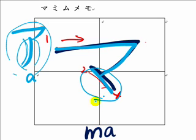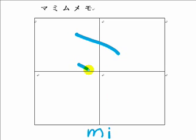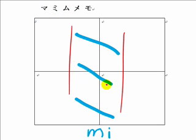Next is mi. From here, ichi ni san, that's all. This is mi. All three strokes are almost the same length. They go down, down, down.